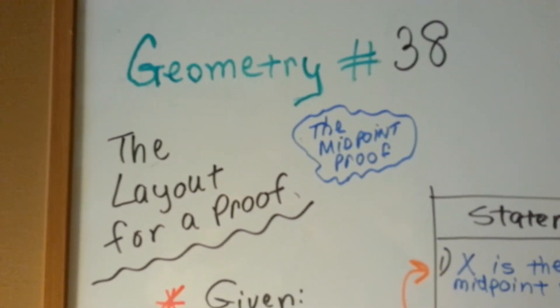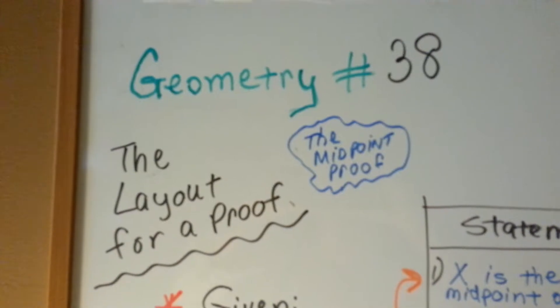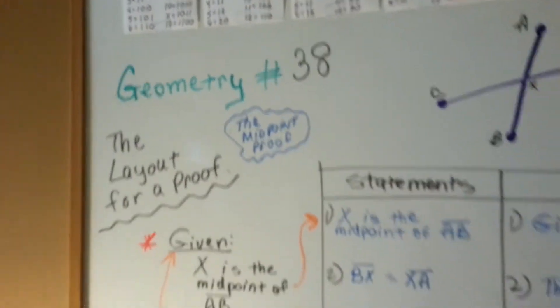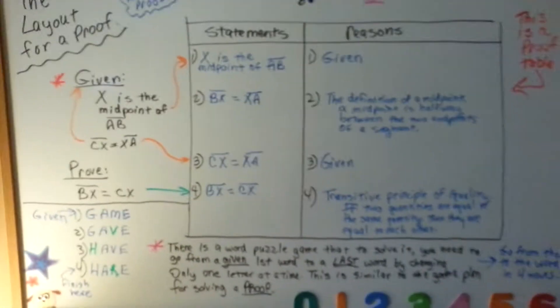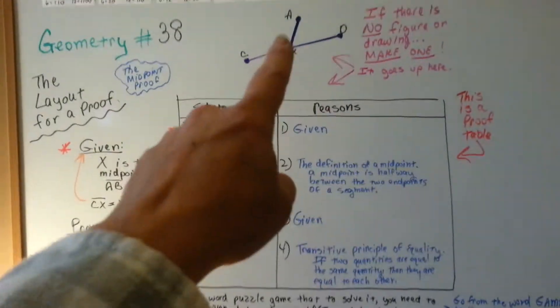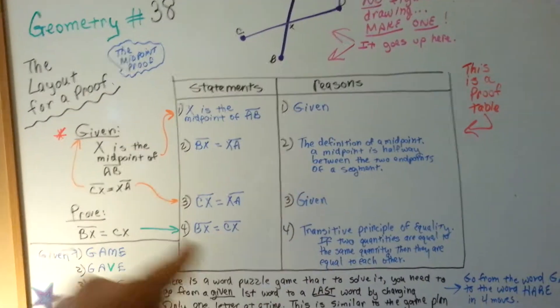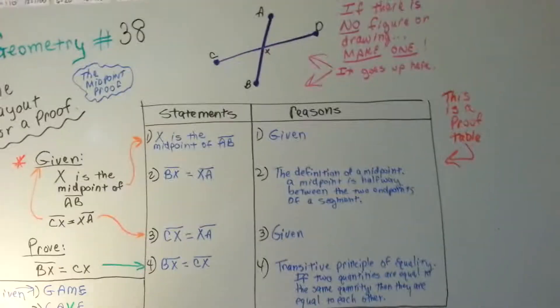The layout for proof. This is going to be an example of the midpoint proof. So, this is what we've got here. We've got a drawing, we've got a table, we've got a given and a prove.